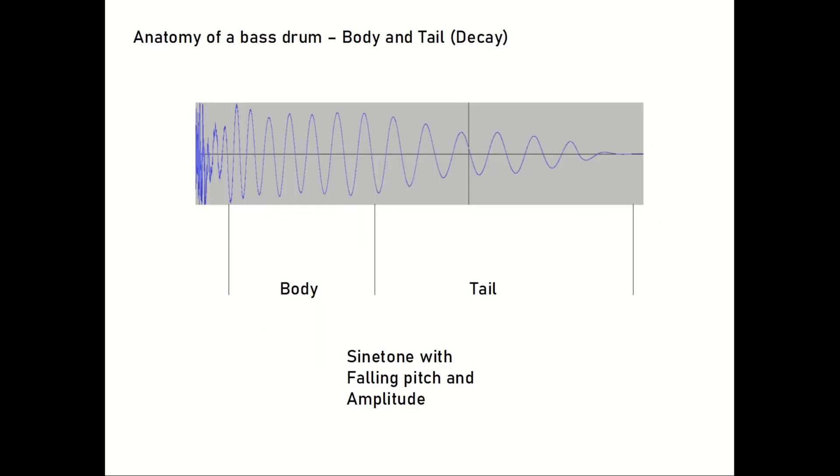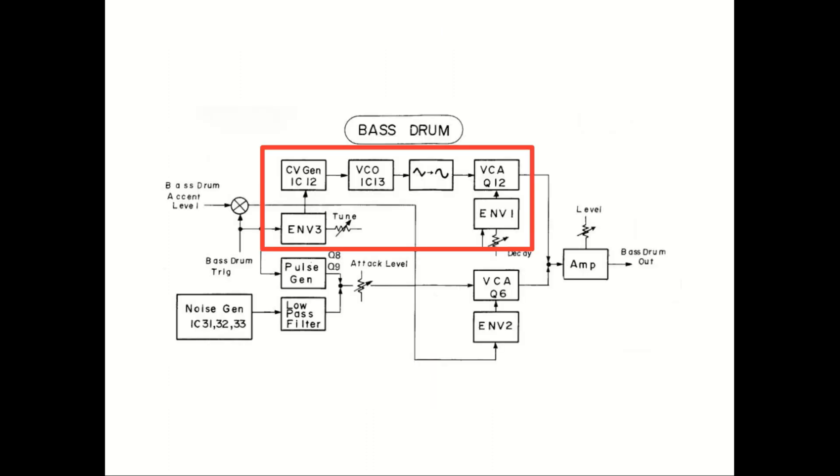The second and third parts are the body and the tail, where the body gives the punch of the kick, and the tail carries the tone and the lower frequencies of the kick sound. This is normally implemented as a sine tone that rapidly drops in pitch and amplitude. The upper part of the block diagram takes care of this, where envelope 3 defines the CV for the pitch drop, and envelope 1 controls the decay and the output level.